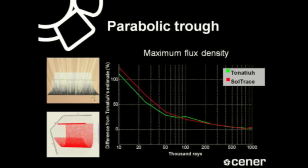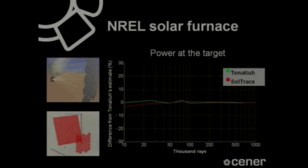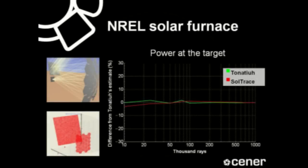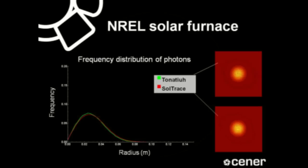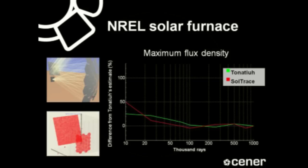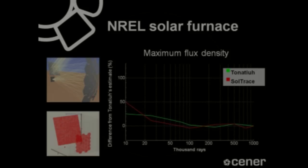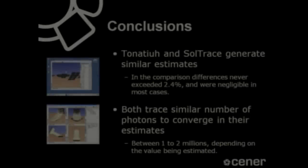The differences in the maximum flux density estimates of both programs were negligible once the number of photons cast reached 1,000,000. For the NREL solar furnace, the results were very similar to those already shown: the differences in power at the target estimates were almost negligible, the final estimates of the frequency distribution of photons were almost identical, and the differences in maximum flux density estimates were negligible once the number of photons cast reached 1,000,000.